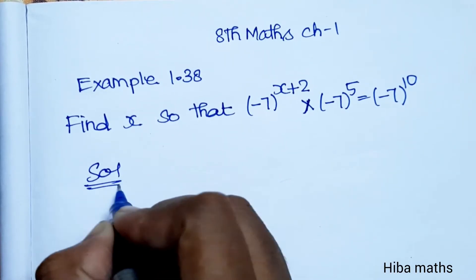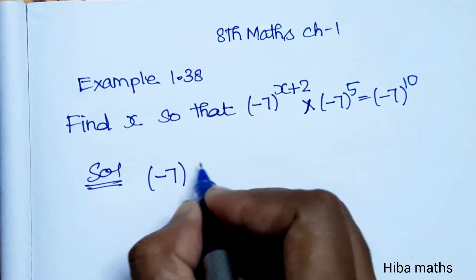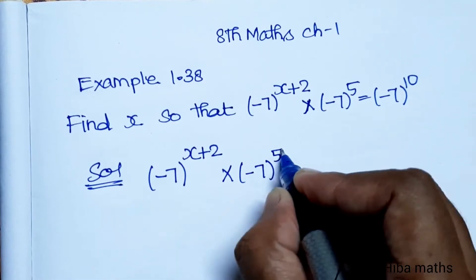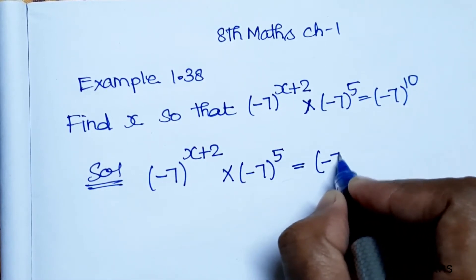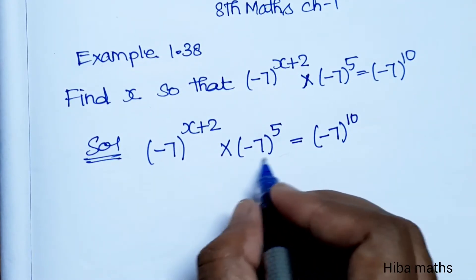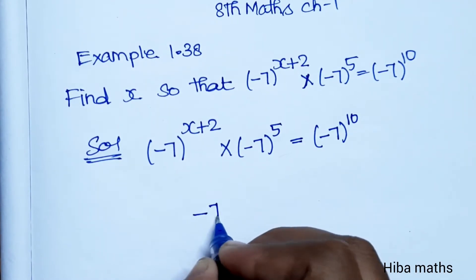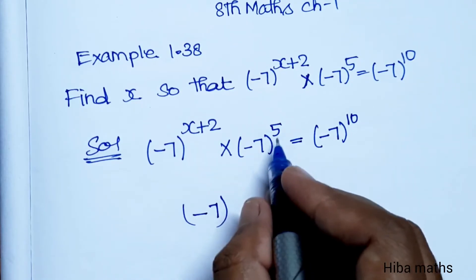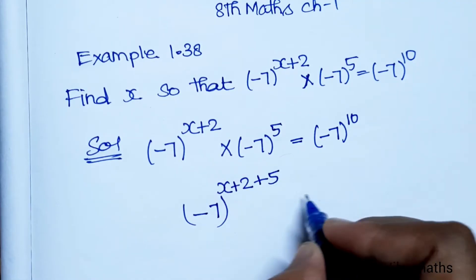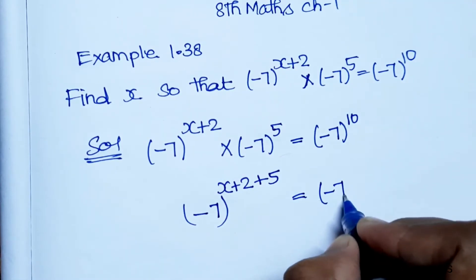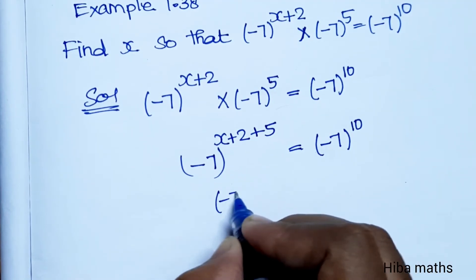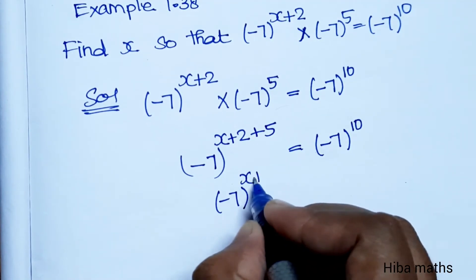(-7)^10. So, add the line to base 2 equal to -7, -7. So (-7)^ is equal to (-7)^10. Simplify the line to (-7)^(x+5+2) is equal to (-7)^10.